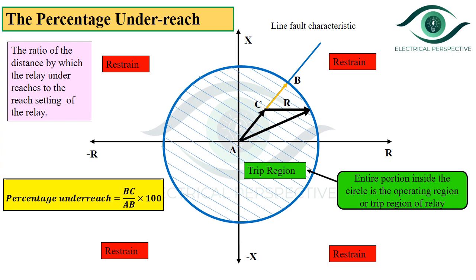Now let us see what is percentage underreach. It is the ratio of the distance by which the relay under-reaches to the reach setting of the relay. From the figure, percentage underreach = (BC / AB) × 100, where BC is the distance by which the relay under-reaches and AB is the reach setting of the relay.